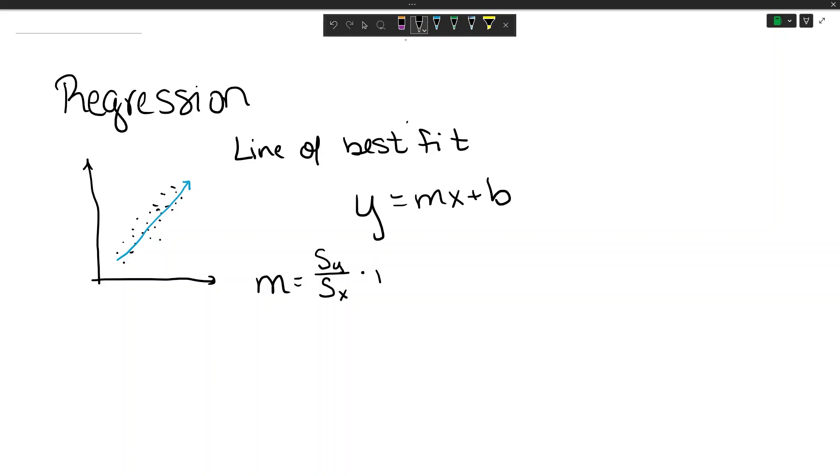b is y bar, the mean of the y values, minus m, the slope we just found, times x bar, the mean of the x values.